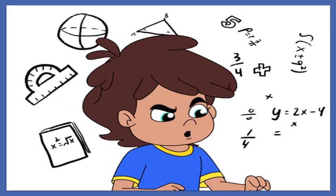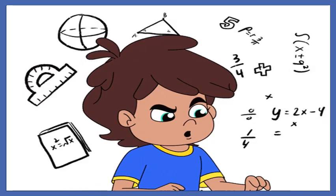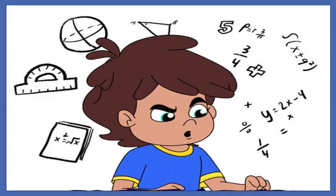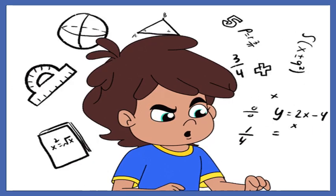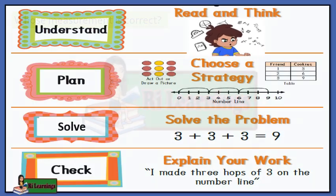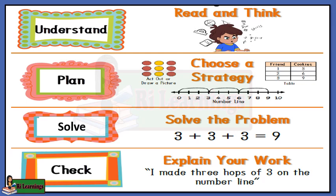In solving two-step word problems, find the hidden question then the given question. You need to use more than one operation. In this guide, we'll explore strategies for dissecting word problems, identifying key information, setting up equations, and ultimately finding solutions.